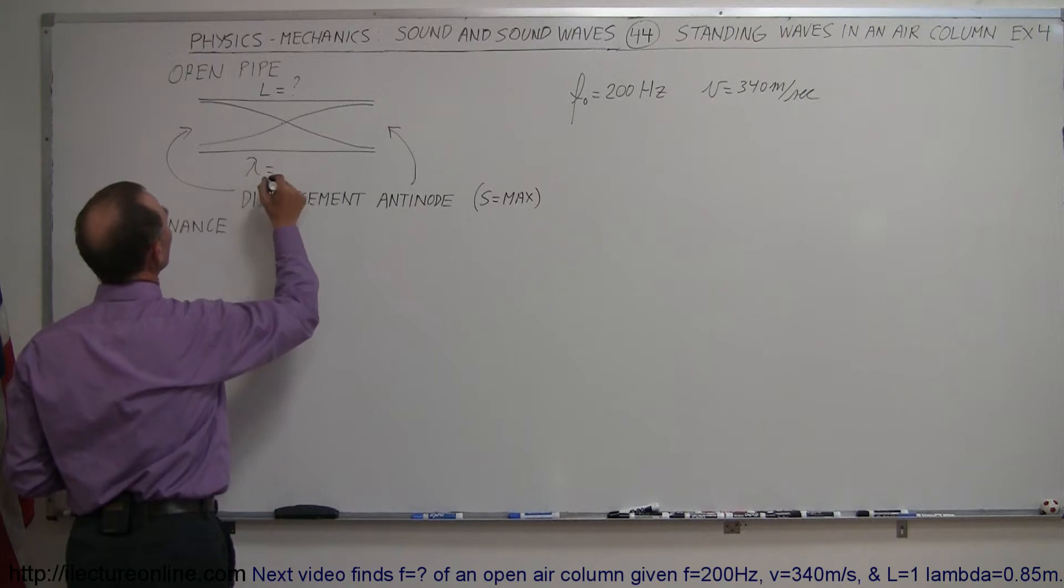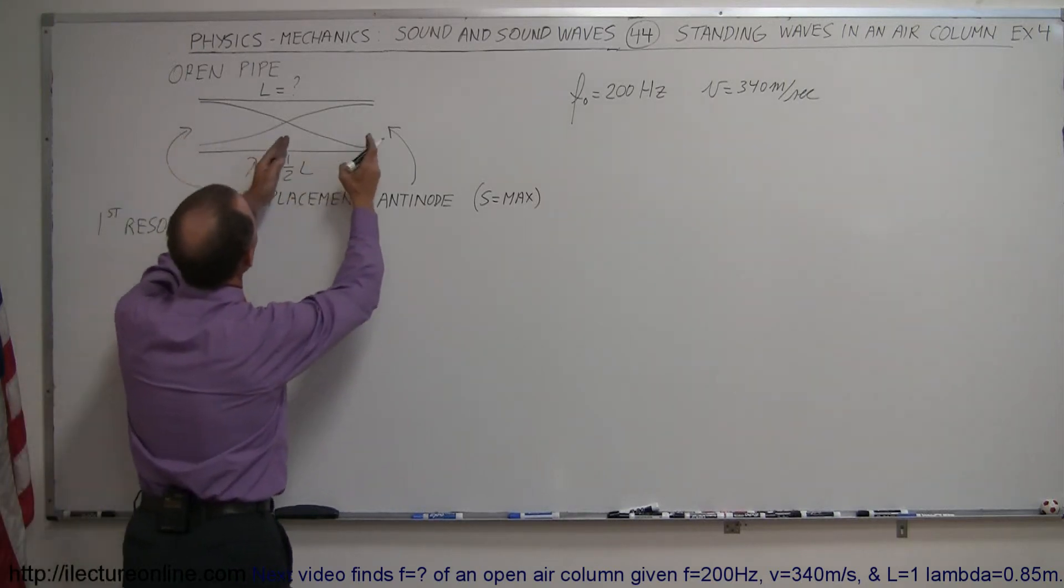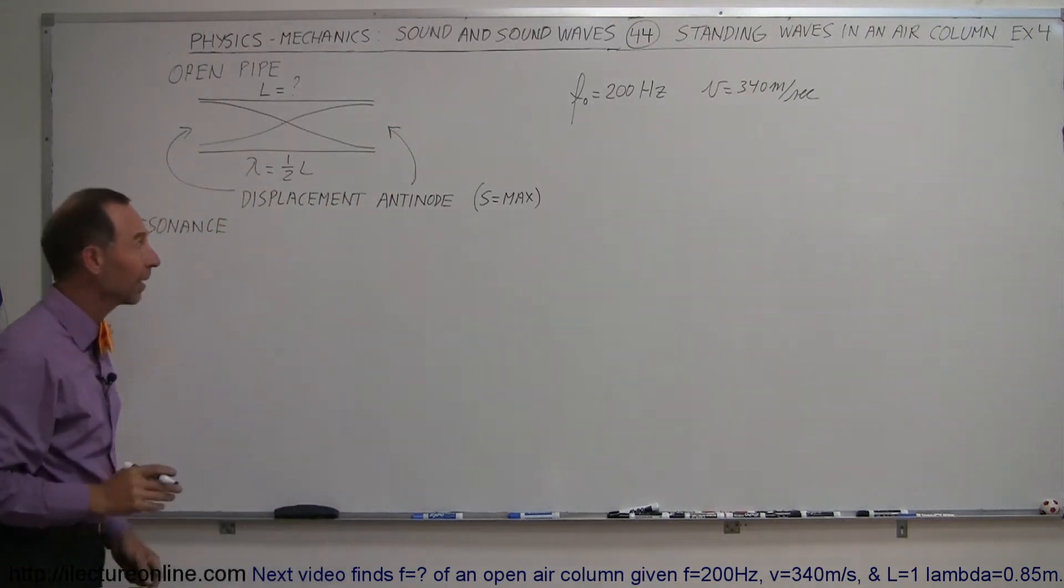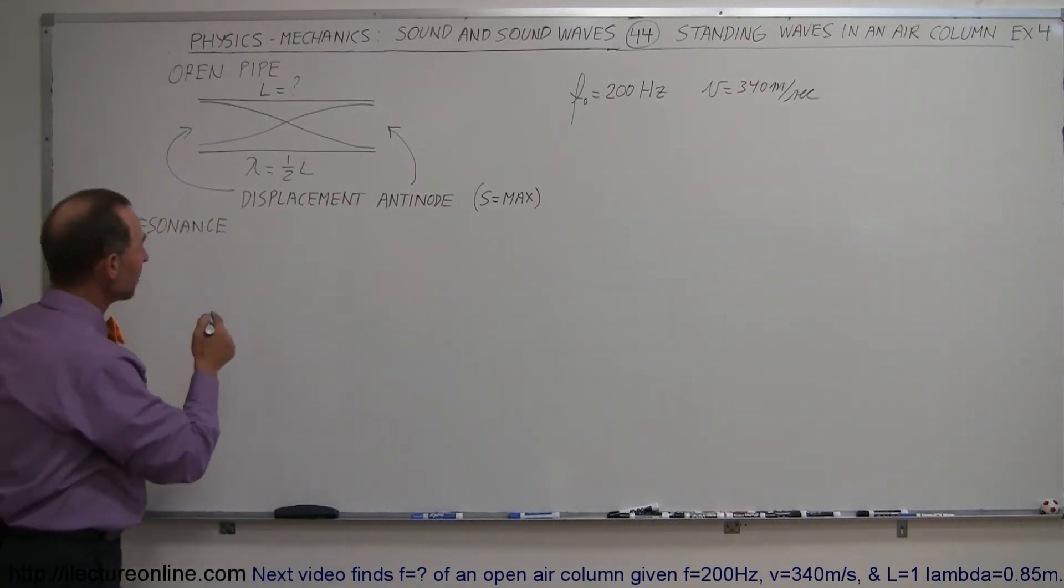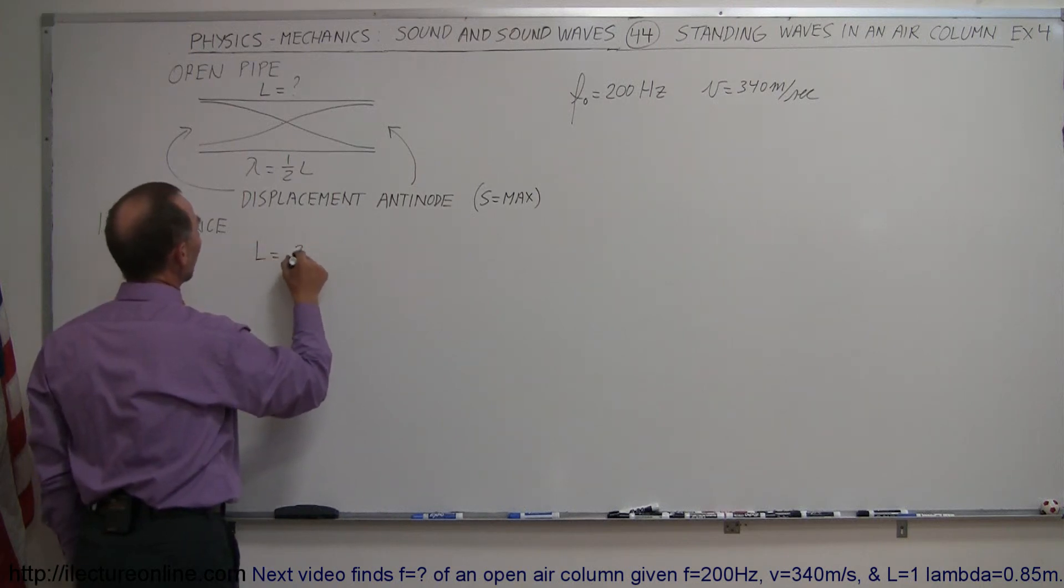The wavelength in this case is equal to one-half the length of the pipe. Because that's a quarter of a wavelength, that's a quarter of a wavelength, giving a half wavelength. So that means that L is equal to twice the wavelength.